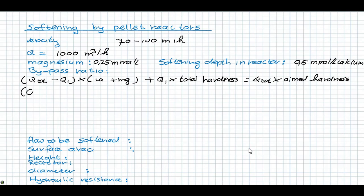So the total flow minus the bypass flow times 0.5 millimole per liter of calcium, in addition to 0.25 millimole per liter of magnesium, plus the Q1 times the total hardness, which was 2.5 millimole per liter, is the total flow times the aimed hardness, which is in this case 1.5 millimole per liter. So solving this equation is equal to total times 1.5.